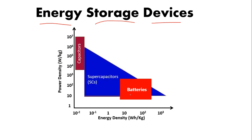Before discussing in detail which storage device is best or better, let us know a little bit about what is basically power density and what is basically energy density. There is a competition between these two things — energy density and power density. The unit of power density is watt per kilogram, meaning if we take one kilogram of something, how many watts will it give.